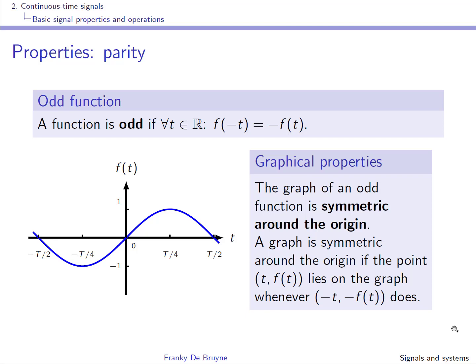A function is said to be odd when it meets the following equation for all times t: the function at time t is equal to the function at time minus t but with a change of sign. If this is true for all t, the graph of an odd function shows symmetry around the origin. A typical odd function is a sine function, and other examples are polynomial functions where the powers are odd.